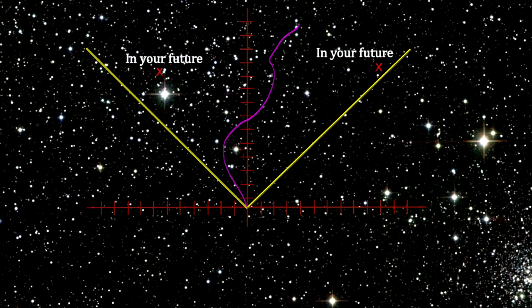The speed of light lines are the divider between events that are in your future, if it's your light cone, and events that are not. By in your future, I mean that you can be connected to them physically in some way.